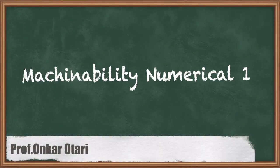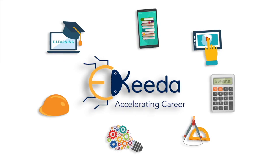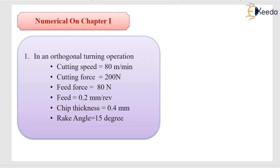Students, let us work on some numericals on metal cutting. In the first problem, an orthogonal turning operation has a cutting speed of 80 meters per minute, cutting force of 200 newtons, feed force of 80 newtons, feed of 0.2 mm per revolution, chip thickness of 0.4 mm, and rake angle of 15 degrees.